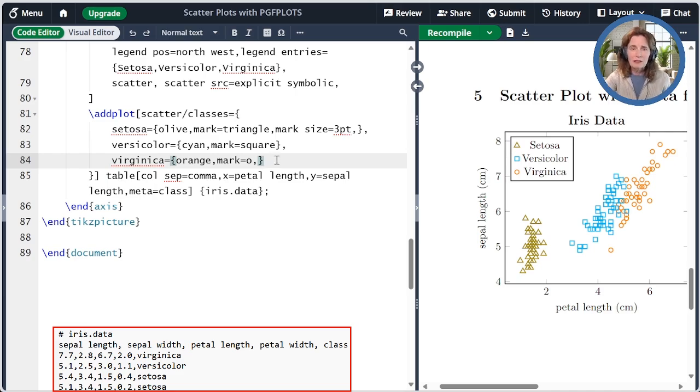Normally, PGF plots and TikZ are pretty loose about extra commas. I have one up here. It's not a problem. But in this case, if you have an extra comma here, it will get very confused. So you have to have that the final class has no comma following it.